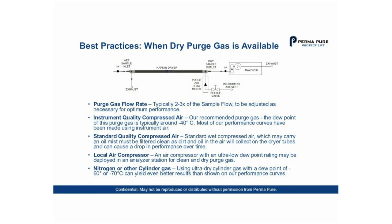For instrument quality compressed air — our recommended purge gas — the dew point is typically minus 40 degrees C. Most of our performance curves have been made using instrument air, and we assume the instrument air is clean and free of oil and dirt, which is very important. There is also what we call standard quality compressed air. A lot of plants don't have the best air. Standard wet compressed air, which may carry an oil mist, must be filtered clean, as dirt and oil in the air will collect on the outside of the dryer tubes and cause a drop in performance over time. This is very critical — we've seen instances where dirt collects and the dryers need to be replaced.